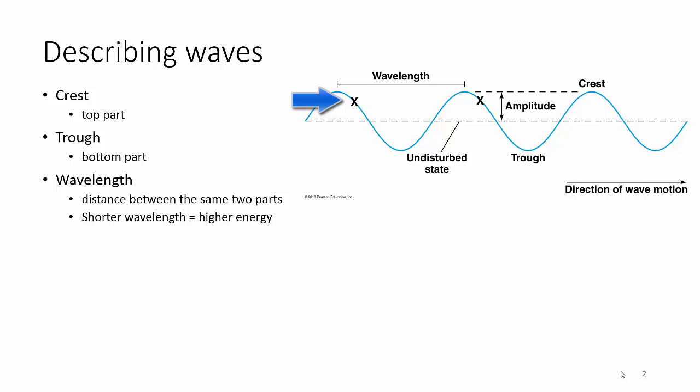The problem with measuring at the crossing points is that people think the wavelength ends when the wave is at the same height going back up — but that's not a wavelength. The first X is on the down slope, so your next X must also be on the down slope. So down slope to down slope, X to X, or crest to crest, trough to trough.